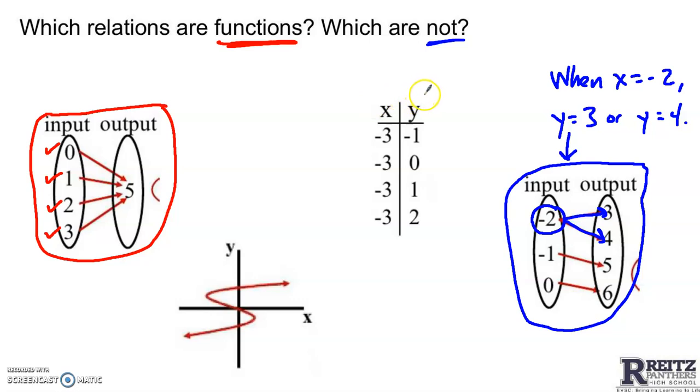This relation in a table is not a function. The issue is that when x is negative 3, y actually has 4 different values. So this one is super duper not a function.